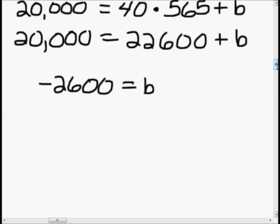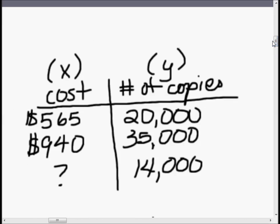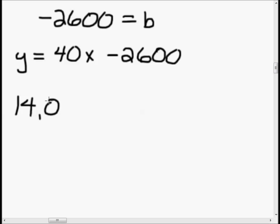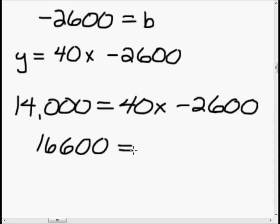Let's go ahead and continue plugging this into our formula. We have y equals 40x minus 2,600 — it's a minus because b is a negative number. Now, scrolling back up, what are we looking for? We know our y is 14,000, and we don't know our x. So we plug in: 14,000 equals 40x minus 2,600. We add 2,600 to both sides, then divide both sides by 40, and we get x is equal to 415. And that is our answer.